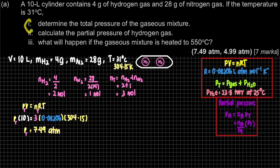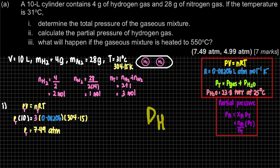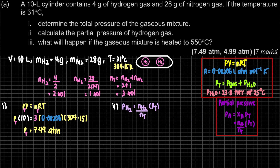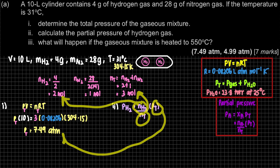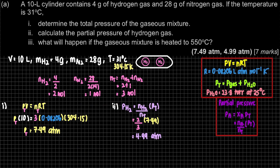That's for question 1. Question 2 asks to calculate the partial pressure of hydrogen gas. The partial pressure is the pressure of that specific gas. Using the formula: P_H₂ = (n_H₂ / n_total) × P_total - number of moles of H₂ is 2, total is 3, and pressure total is from the previous question. Hence, you get the answer to be 4.99 atm.